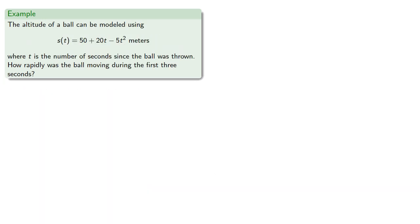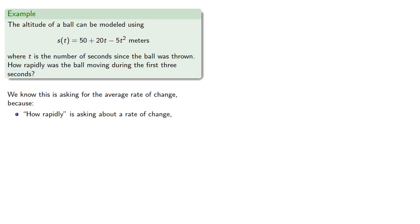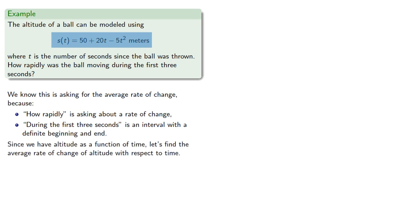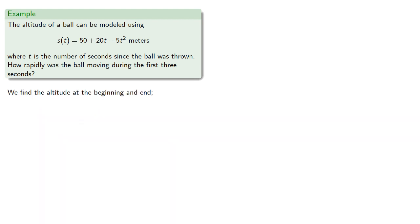As another example, suppose we have the altitude of a ball, and we want to know how rapidly the ball was moving during the first three seconds. We know this is asking for an average rate of change because 'how rapidly' is asking about a rate of change, and 'during the first three seconds' is an interval with a definite beginning and end. Since we have altitude as a function of time, we'll find the average rate of change of altitude with respect to time. So we need to find the altitude at the beginning, at 0 seconds, and at the end, at 3 seconds.